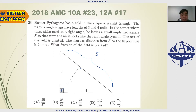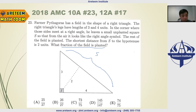What we want to know is the fraction of the field that is planted. The planted part is the part not covered by the small square. The best approach is to break the whole field into small pieces — connect the tip of the square to the two far vertices of the triangle, and also draw the diagonal of the square.